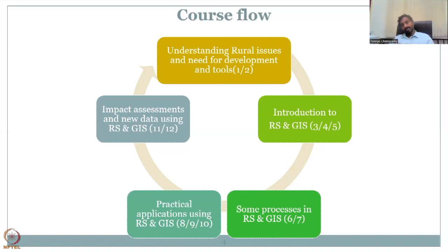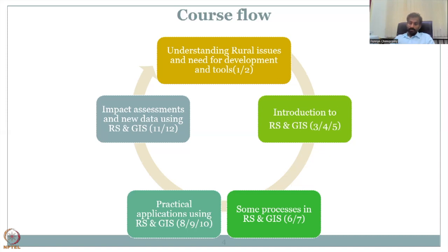We have set the context in weeks one and two. Weeks three, four, and five will be a very basic introduction to remote sensing and GIS, divided into three course week lectures. You will be introduced to what remote sensing is, how it is different, where you can get remote sensing data, and what the difference is between open source, proprietary data, and data on demand. Open source is free and open to all; proprietary data requires payment; and data on demand is where you submit a request and data is collected and provided for you.